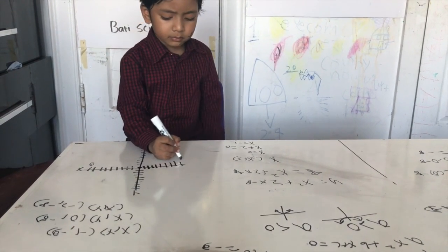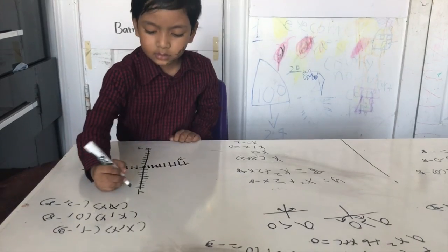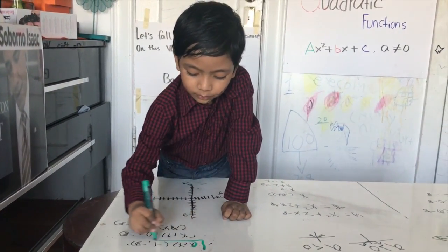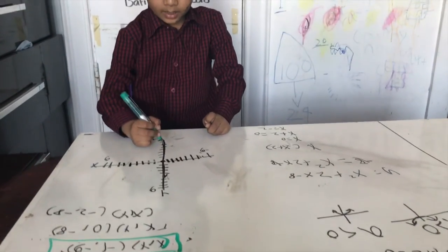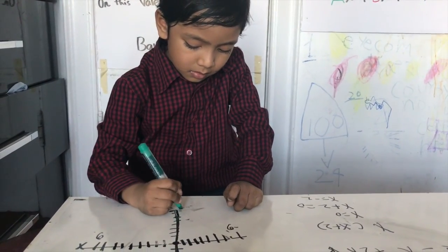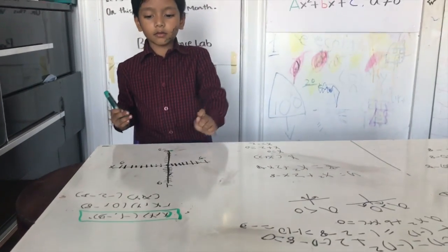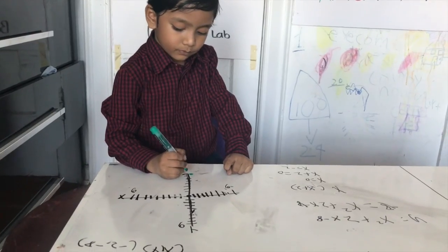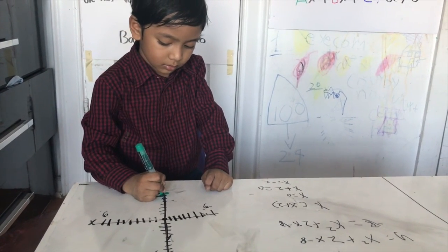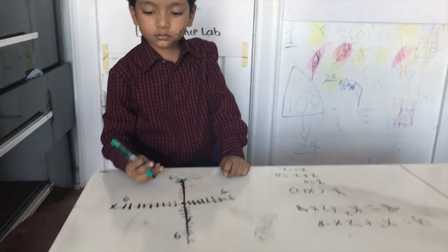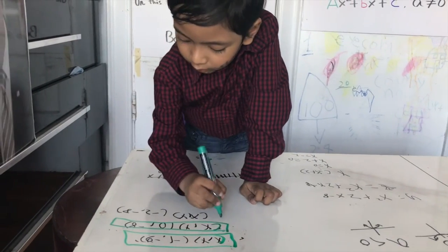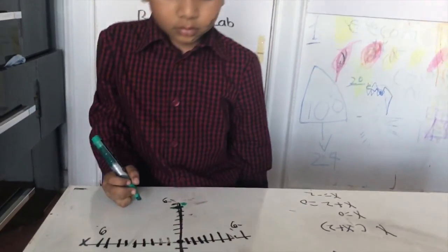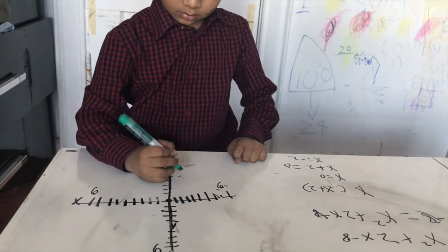So this is 9, this is negative 9, this is negative 9, this is 9. First I'm going to plot the vertex, which is negative 1, negative 9 — one unit left and nine units down. Then the second point, zero, negative 8 — eight units down. And the third point, negative two, negative eight — two units left and eight units down. Now we draw the parabola.